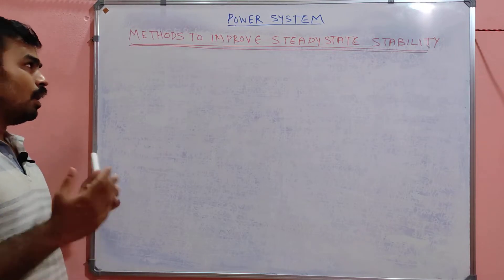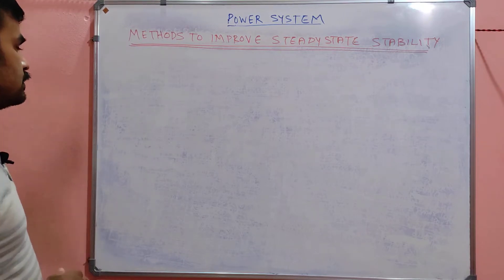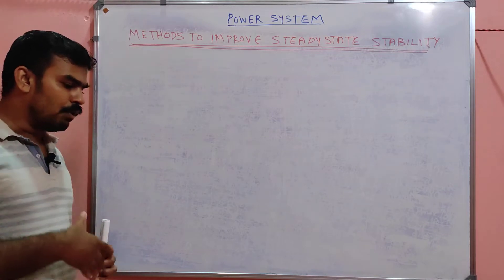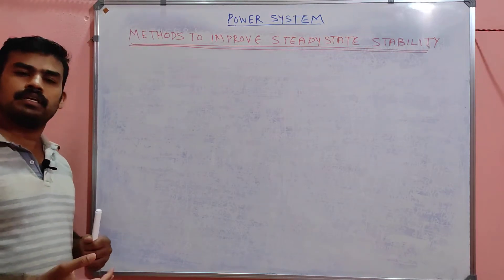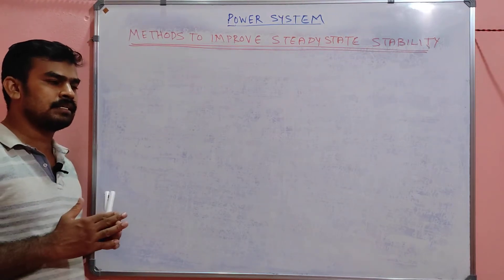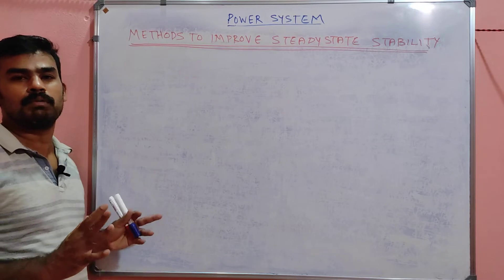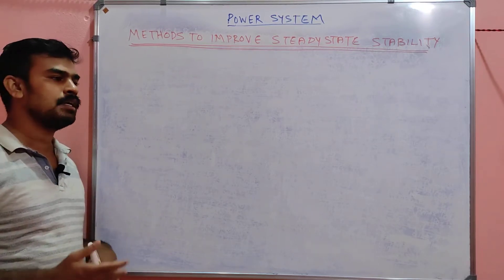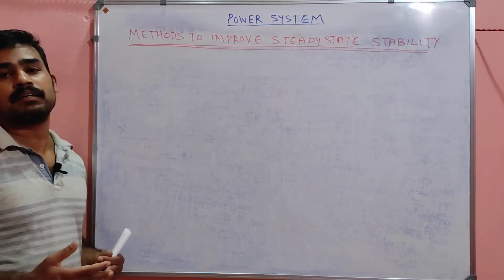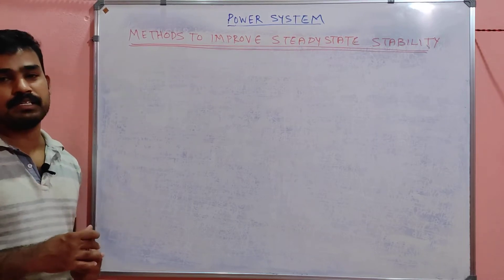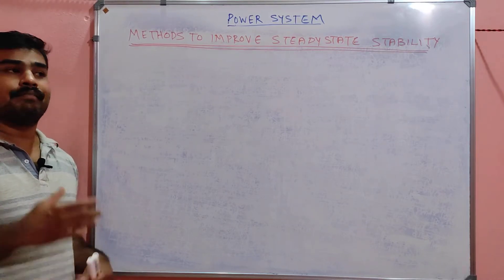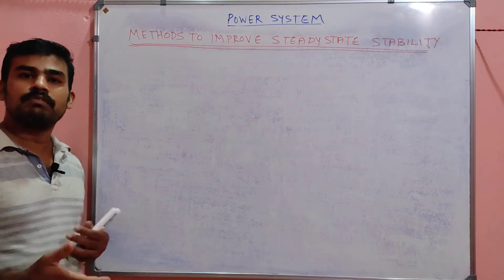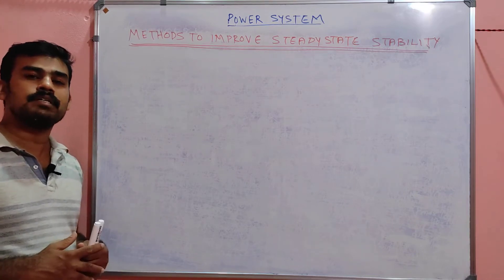Now we are going to discuss methods to improve the steady state stability — that means, how can we improve it even when we know there will be some steady state problems. There will be some small disturbances in the power system which are unavoidable, but how can we improve or resolve those disturbances as well as possible? Those are the possible ways we are going to discuss.